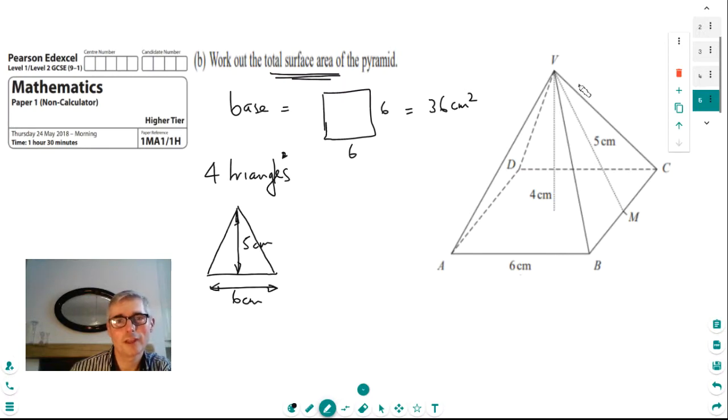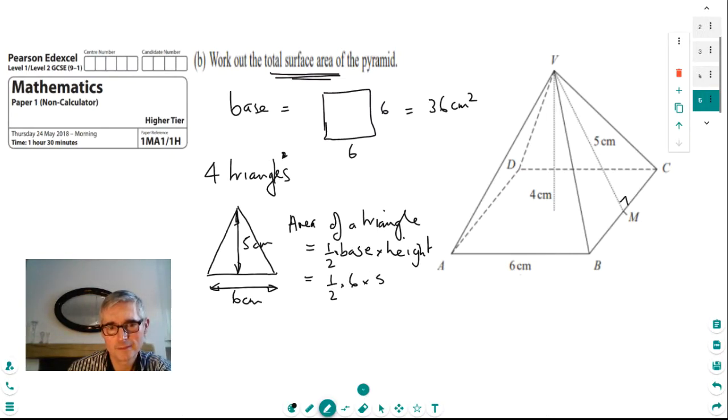And we know the area of a triangle is given by the formula half base times height. And the height in this case, by the way, it's not just four centimetres, although that's the height of the pyramid, we're talking about the perpendicular height of the triangle. So we're actually talking that's a right angle there, which makes it perpendicular. We're talking about that length. So this is half times six times five, which is going to make 15 centimetres squared.